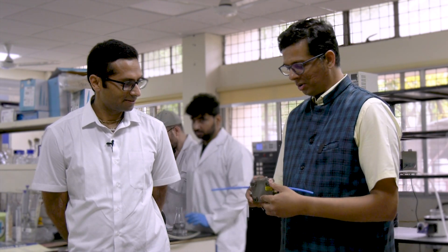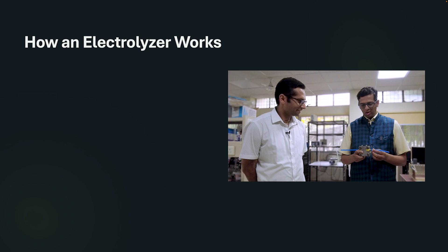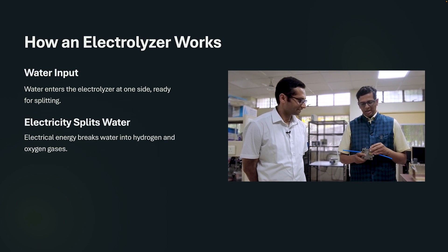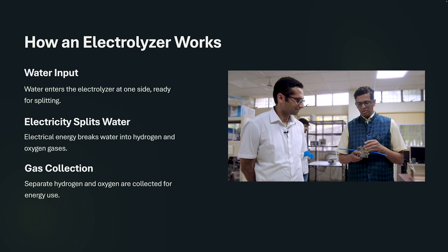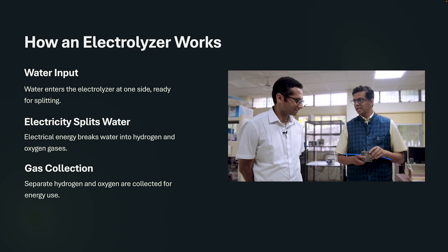Hi Professor Pratham, would you like to see an electrolyzer? Sure, yeah. So I've got a lab scale prototype and as you can see, we can supply water from this side and once we supply the electricity, the electricity splits the water into respective hydrogen and oxygen, and we can collect it from the other side. Wow, isn't that interesting — such a small piece of equipment can basically break down water and produce a valuable source of energy.